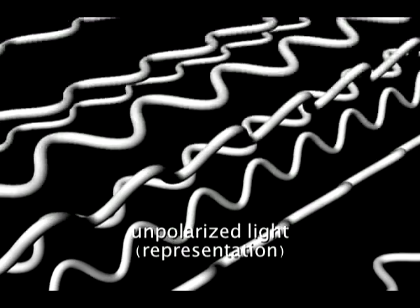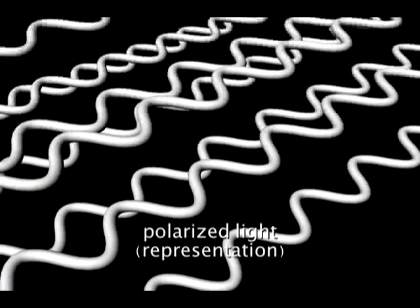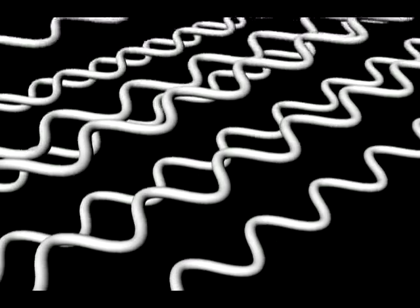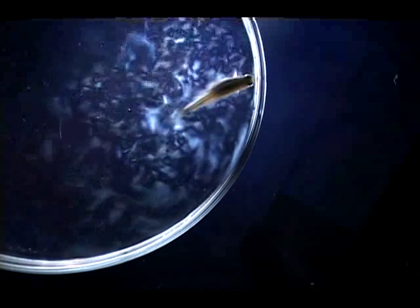But polarized light makes them visible. Most sources of light emit light waves that have random orientation. When the light is passed through special filters, it becomes polarized, which means the waves are oriented in one direction. The particles block or transmit the polarized light depending on their alignment.